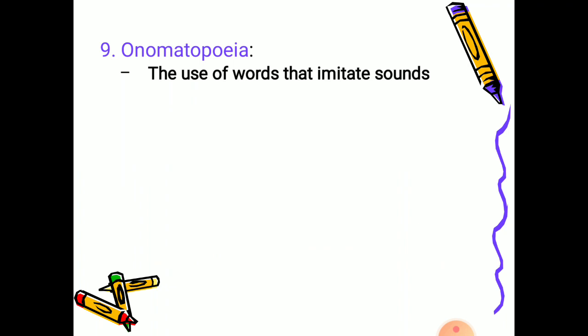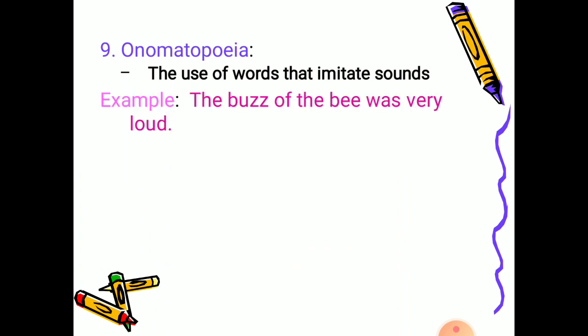Onomatopoeia is the use of words that imitate sound. For example, 'the buzz of the bee which was loud.' The use of the word 'buzz' is onomatopoeia — we get that sound effect from it.